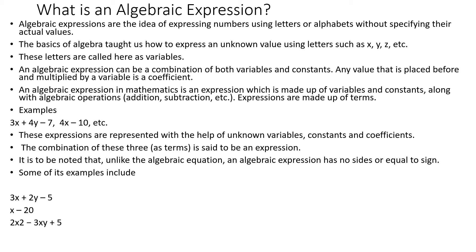So what is an algebraic expression? It is actually a combination of numbers as well as alphabets. Here the alphabet doesn't specify its actual value, but it is a combination of numbers and alphabets. This expression is made up of variables and constants along with some algebraic operations — that is, addition, subtraction, multiplication, or division.